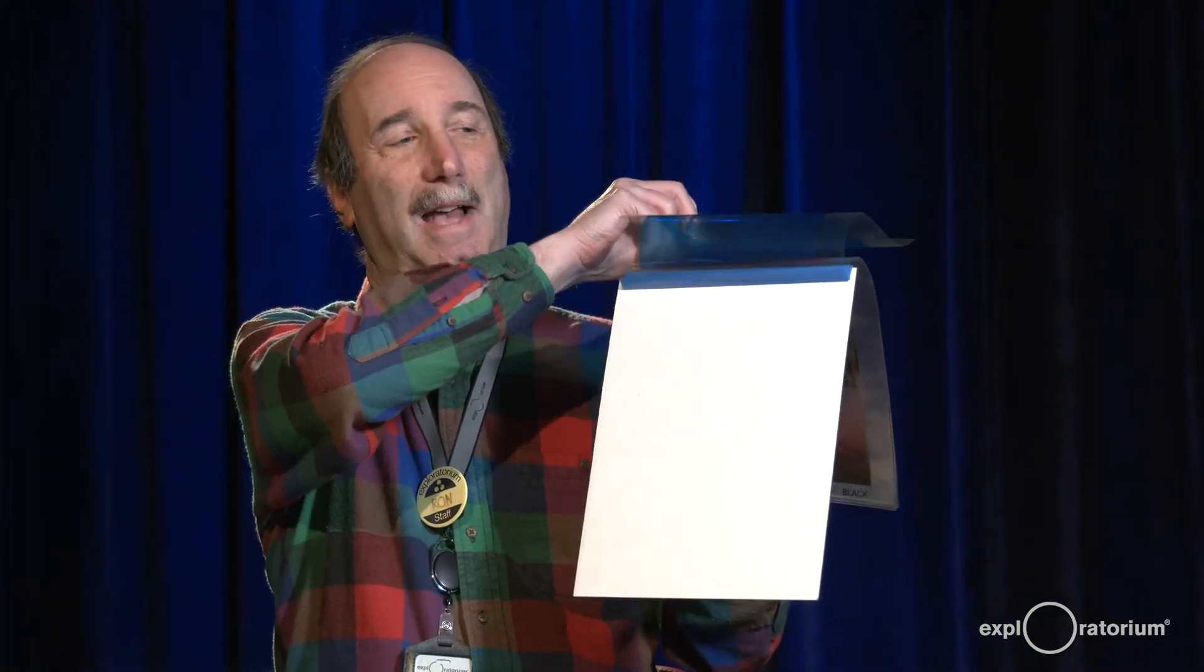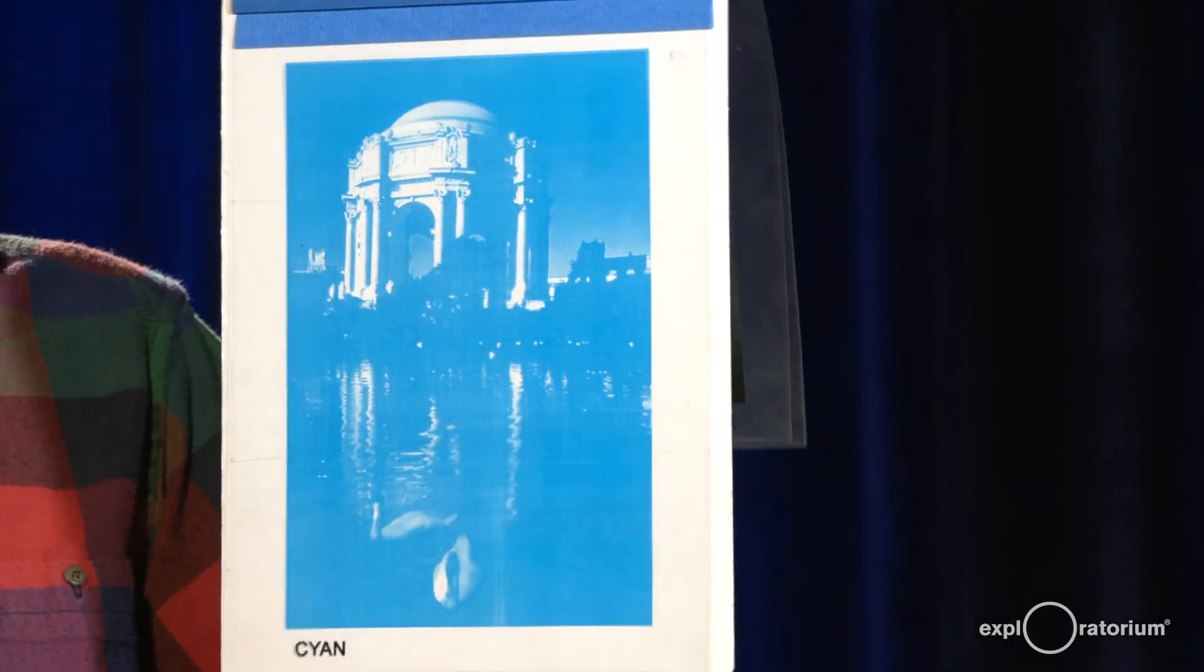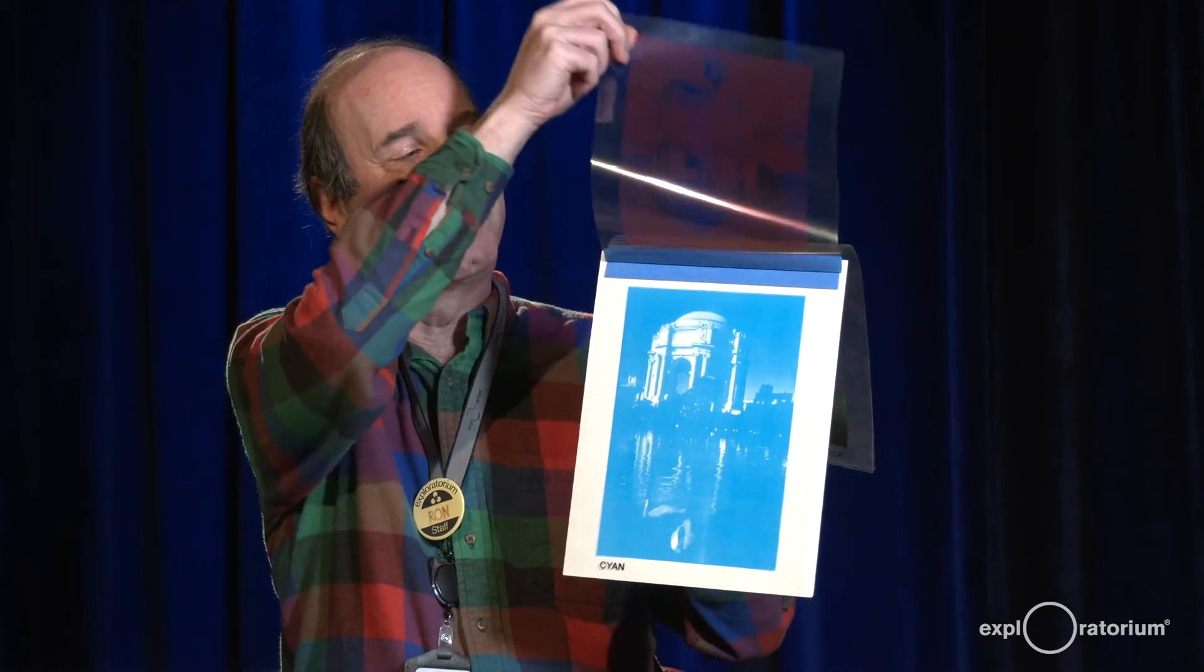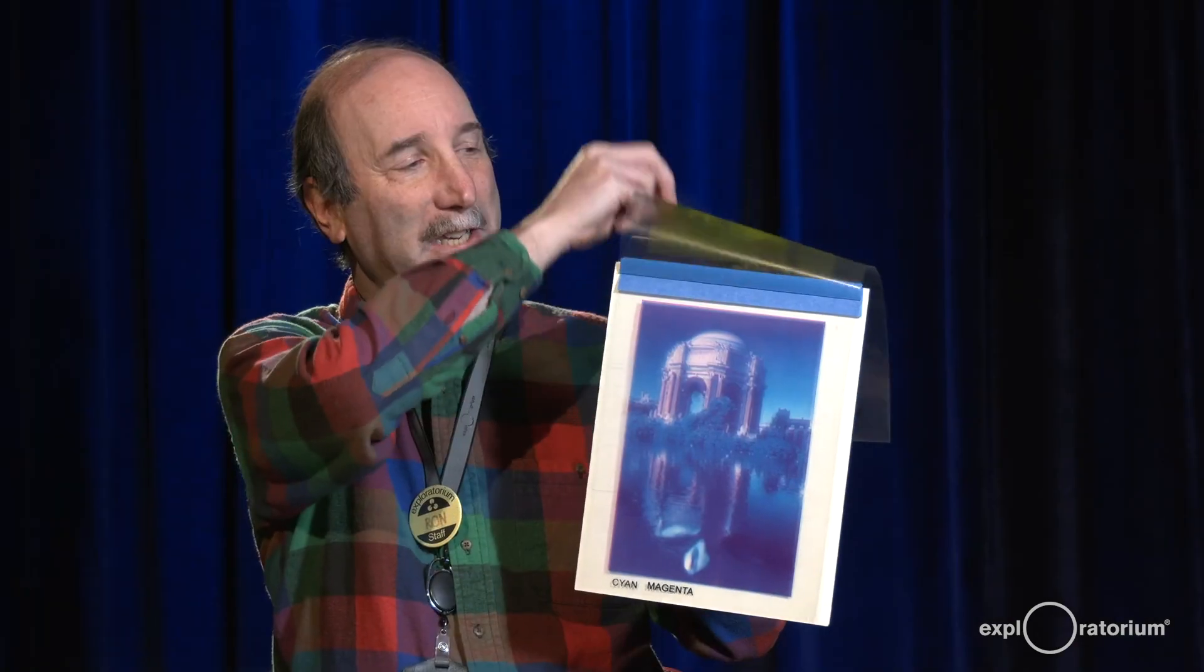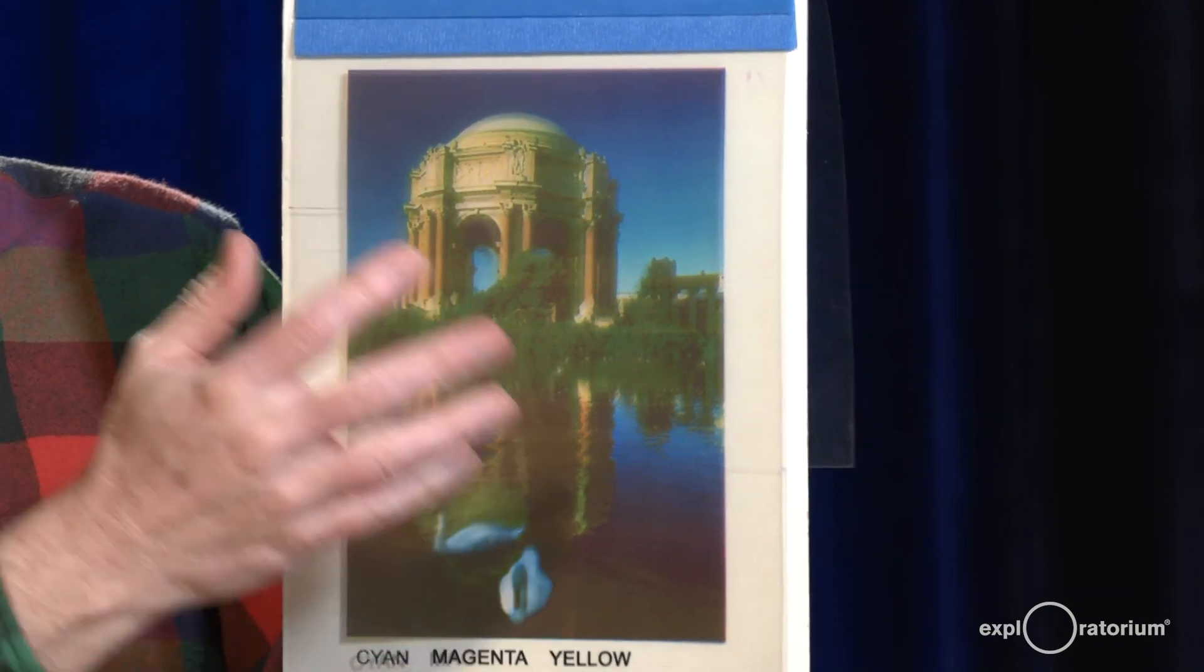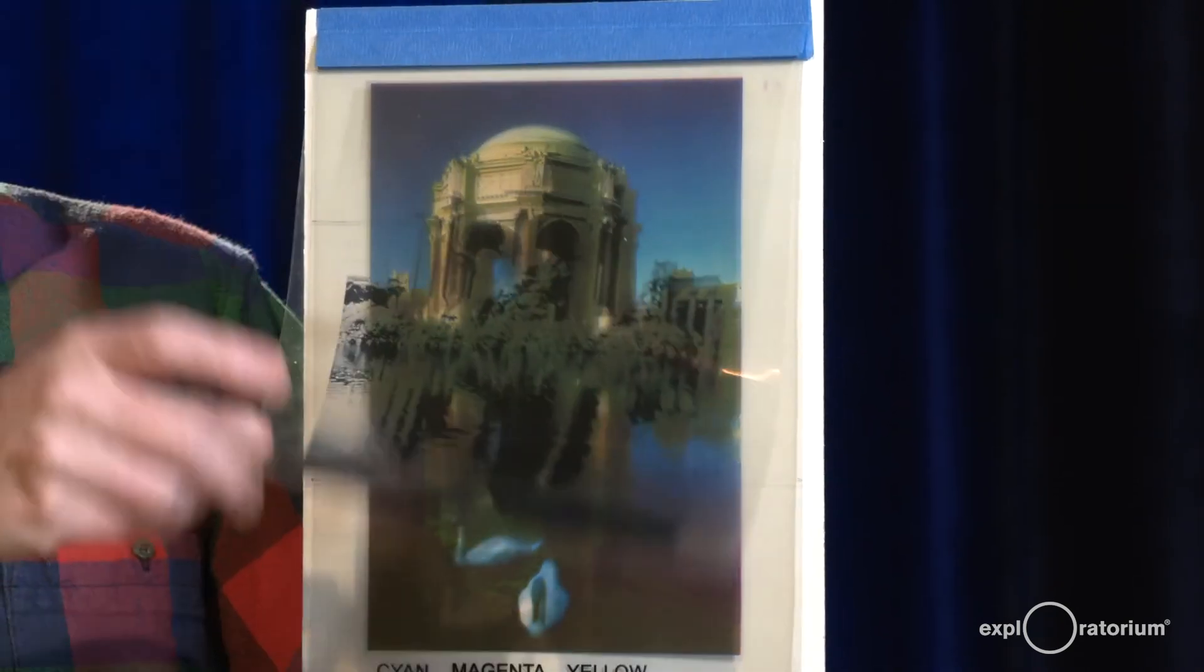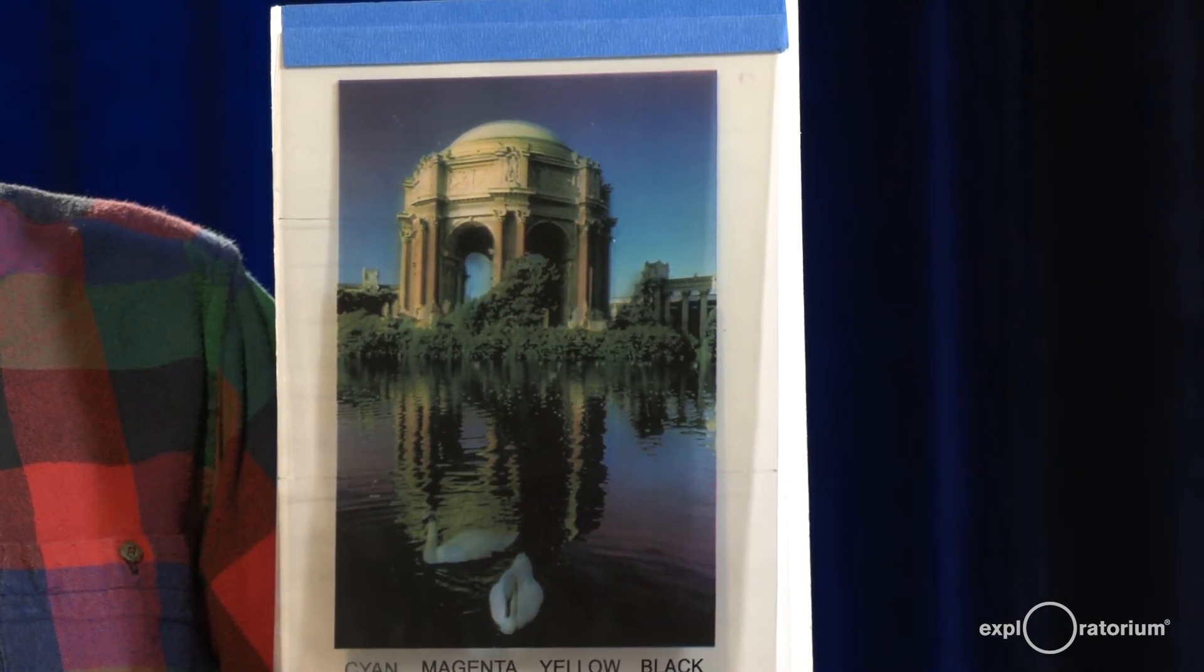Just in case you don't trust the computerized version I just showed you, I have a real world color separation right here. This has the cyan, magenta, and yellow black color separations. First I'm going to add the cyan version. This is the Palace of Fine Arts, our previous home. I'm now going to add the magenta version. Now you're beginning to see a little color. Let's add yellow, which should give us a more or less full color image except for the fact that they don't add together to a really good black. So we have to add that last black separation in. And there we see the full color image of the Palace of Fine Arts, our original home.